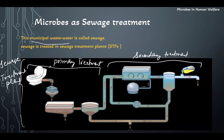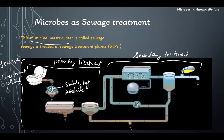The first step under primary treatment is that water will be passed through various channels so that it can be filtered. Here you can see that there are various filters placed, which filter out various solids and big particles like pieces of stone, cloth, or anything else which should not go further.